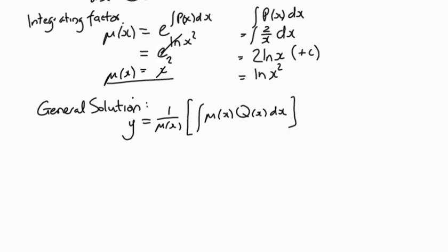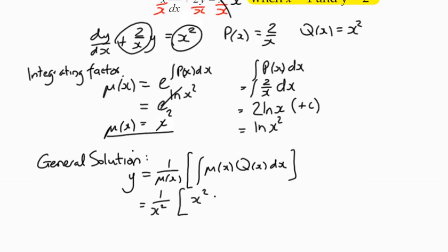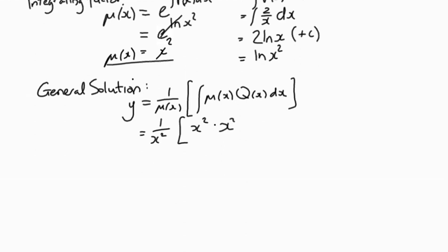We know that μ(x) is x², so we've got 1/x² multiplied by x² times q(x), which is x². That's the integral of that dx, which basically means we've got 1/x² multiplied by the integral of x⁴ with respect to x. That integrates nice and easily.